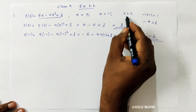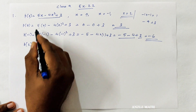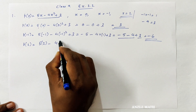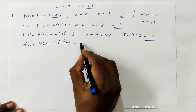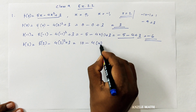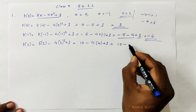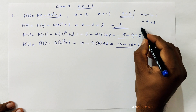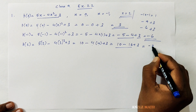Next, x is equal to 2: 5 into 2, minus 4 into 2 squared, plus 3. 5 into 2 is 10, 2 squared is 4, so minus 4 into 4 is minus 16. 10 minus 16 is minus 6, plus 3, so the answer is minus 3.